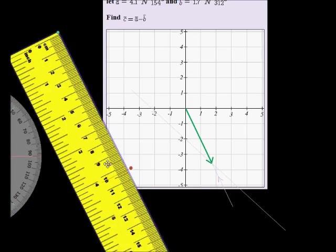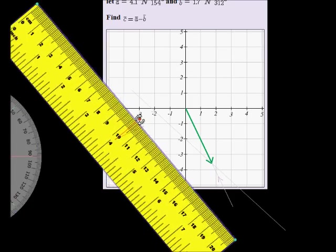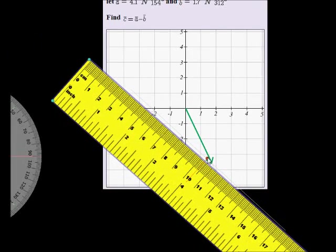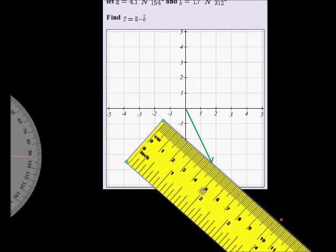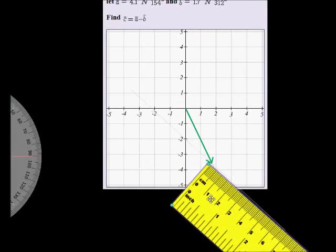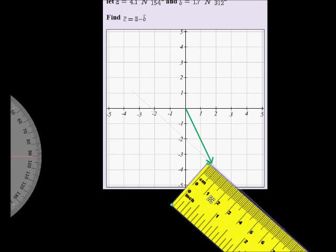On that line, instead of measuring 1.7 on this side, we're going to measure 1.7 on this side. There we go. 1.7 will be right here. Right there is 1.7, that is our B.